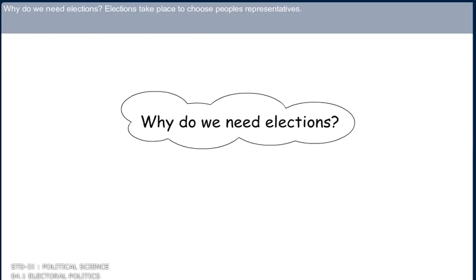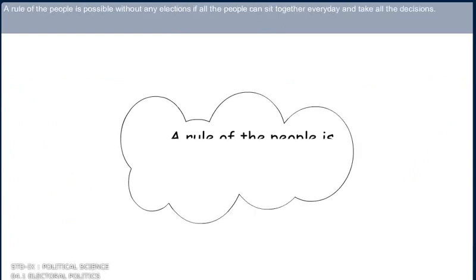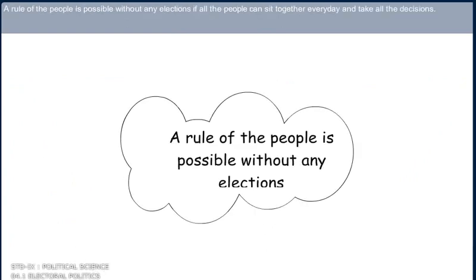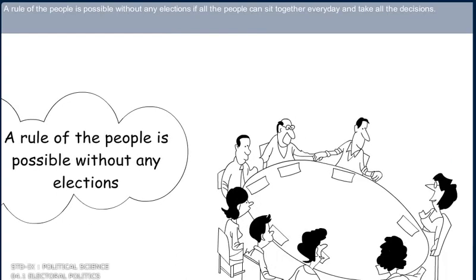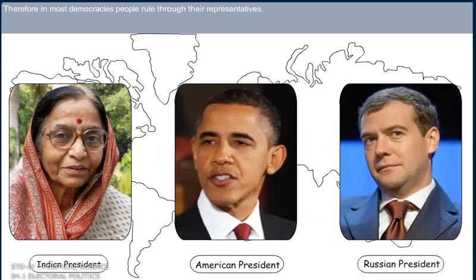Why do we need elections? Elections take place to choose people's representatives. A rule of the people would be possible without elections if all the people could sit together every day and take all decisions. But this is not possible in any large community to take decisions on all matters or issues. Therefore, in many democracies, people rule through their representatives.